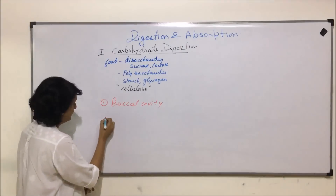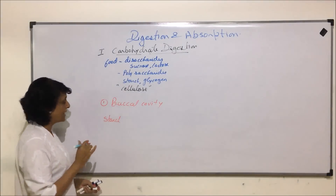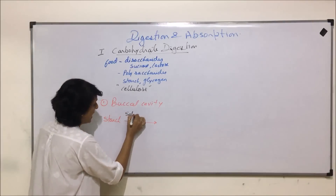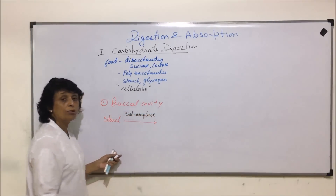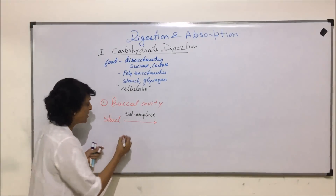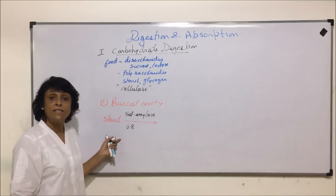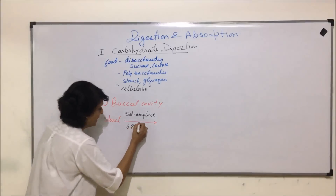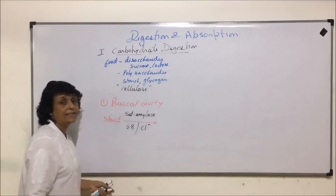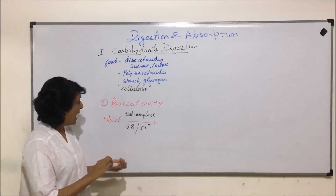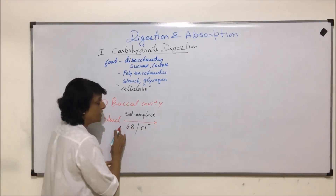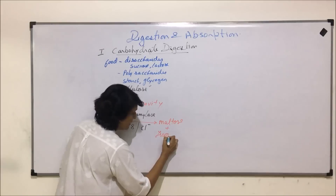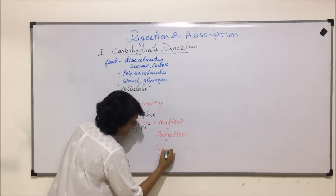In the buccal cavity, starch — that is the polysaccharide — is acted upon by the enzyme salivary amylase, which is also known as ptyalin. The pH at which this reaction takes place is 6.8, which is the pH of saliva — slightly acidic, slightly less than 7. Chloride ions are essential for the activation of this enzyme. After the action of this enzyme on starch, it is broken down into maltose, isomaltose, and limit dextrins.